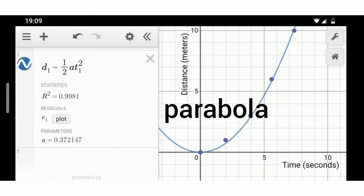A parabola described by d1 is approximately equal to 1 half at1 squared.